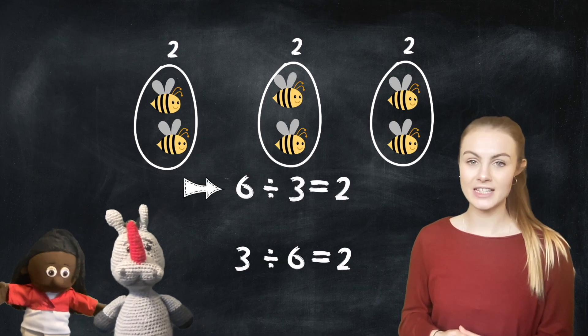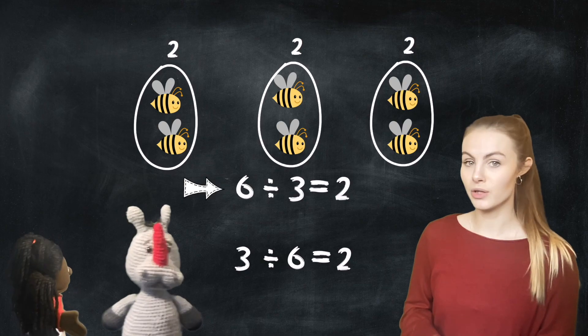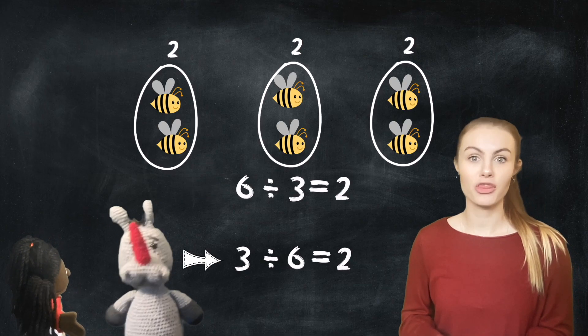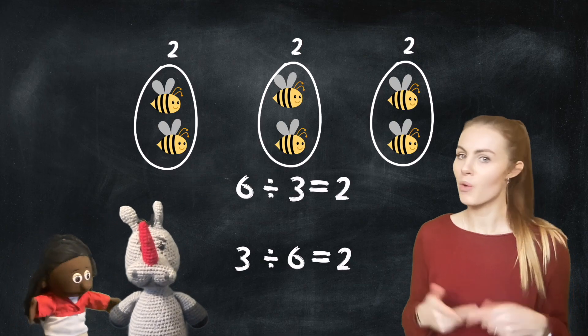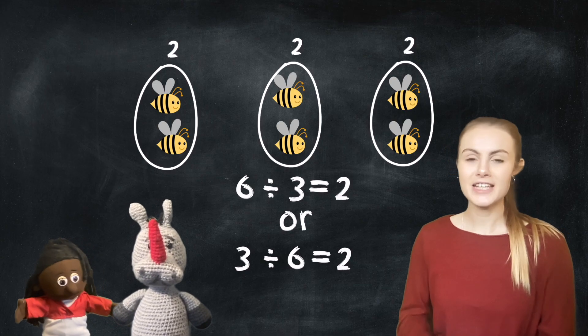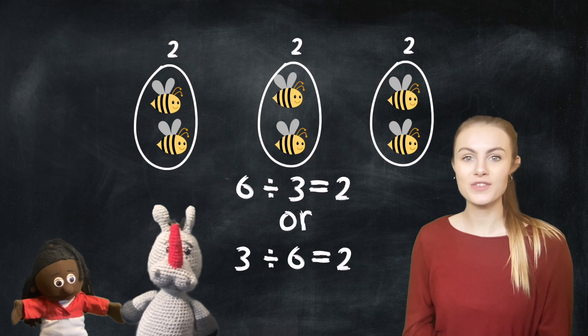So, Roo thinks that we write 6 divided by 3 equals 2. And Pig thinks that we write 3 divided by 6 equals 2. What do you think? Either tell the screen or an adult. Pause the video now.